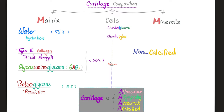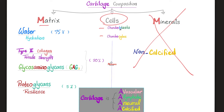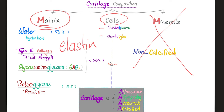Cartilage does not contain calcium under normal circumstances, but it does have cells — chondroblasts and chondrocytes. The matrix contains type 2 collagen, glycosaminoglycans, and proteoglycans. But when it comes to elastic cartilage specifically, there are tons of elastin in the matrix, which is why they are elastic.